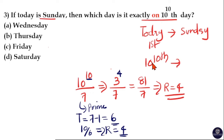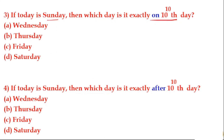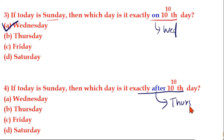Remainder 4 means there are 4 odd days. Since I did not subtract 1 from 10 raised to 10, Sunday is already included in this count. So the 1st odd day is Sunday, the 2nd is Monday, the 3rd is Tuesday, and the 4th odd day is Wednesday. Therefore, on the 10 raised to 10th day, it is Wednesday. After the 10 raised to 10th day it would be Thursday, but on the 10 raised to 10th day itself, the answer is Wednesday.